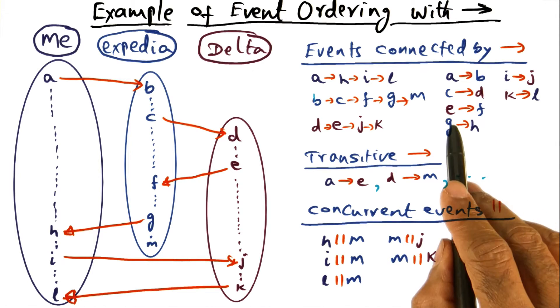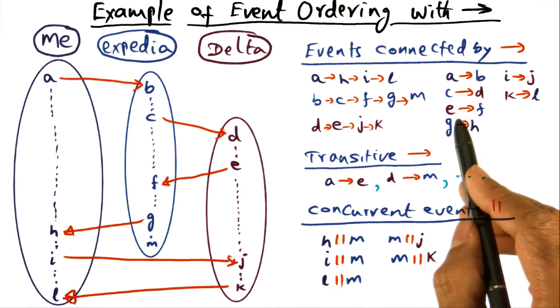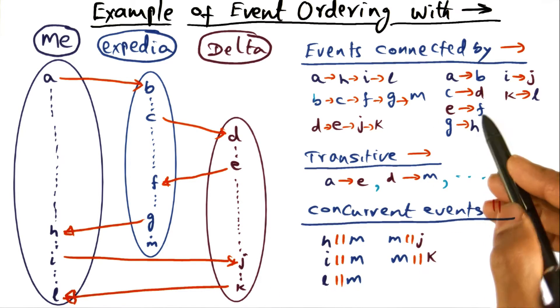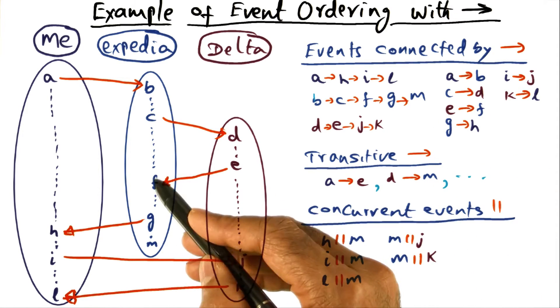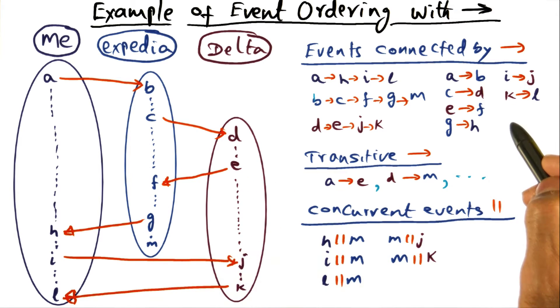E to F is a message from Delta back to Expedia confirming my reservation. So E is the act of sending the message from Delta, and F is the act of receiving the same message from Delta on Expedia. So those are all the communication events.